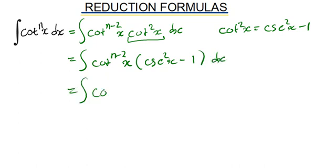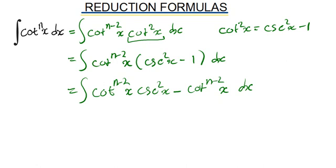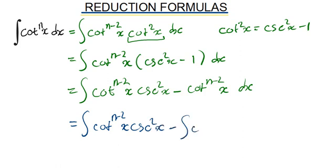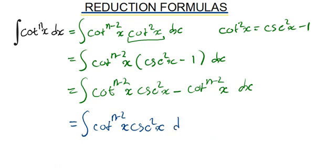I am going to distribute what I have here: cotangent^(n-2)(x) · cosecant²(x) minus cotangent^(n-2)(x), dx. I am going to write these as separate integrals. What I am going to have is the integral of cotangent^(n-2)(x) · cosecant²(x) dx, minus the integral of cotangent^(n-2)(x) dx.